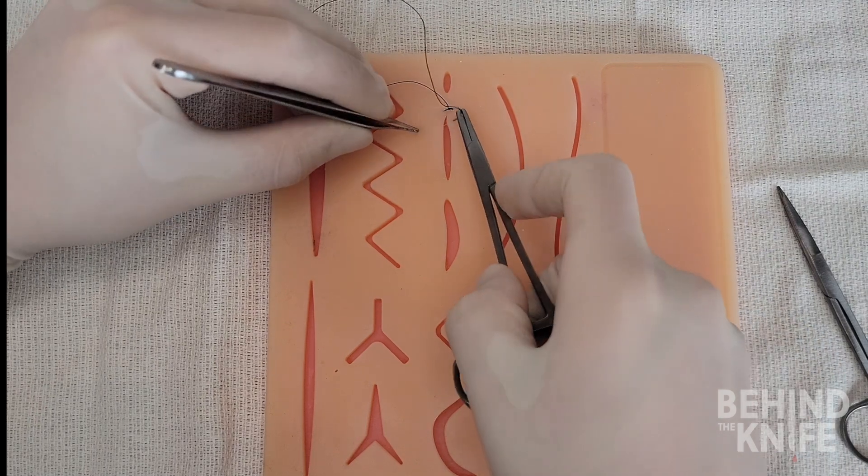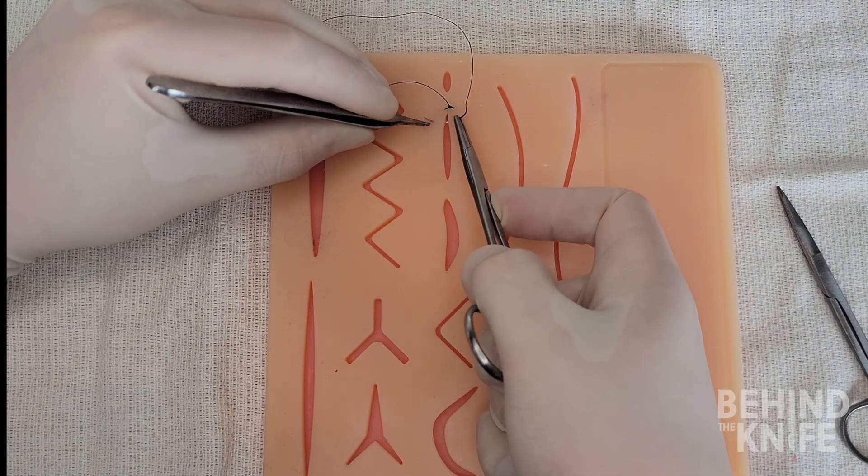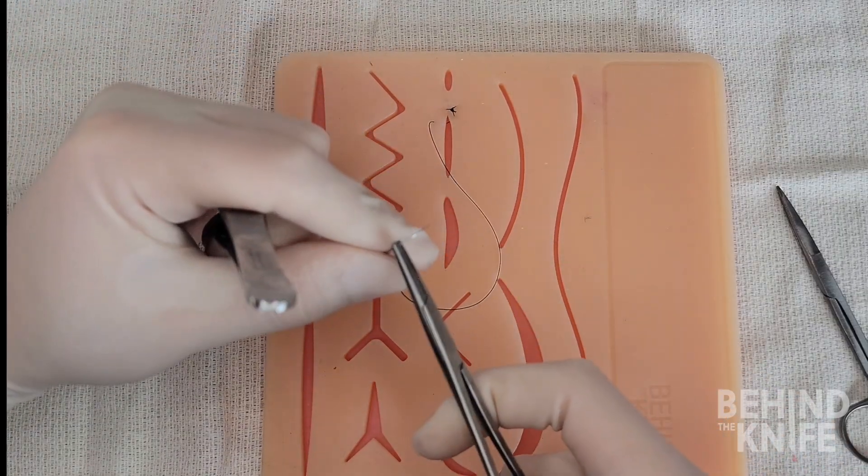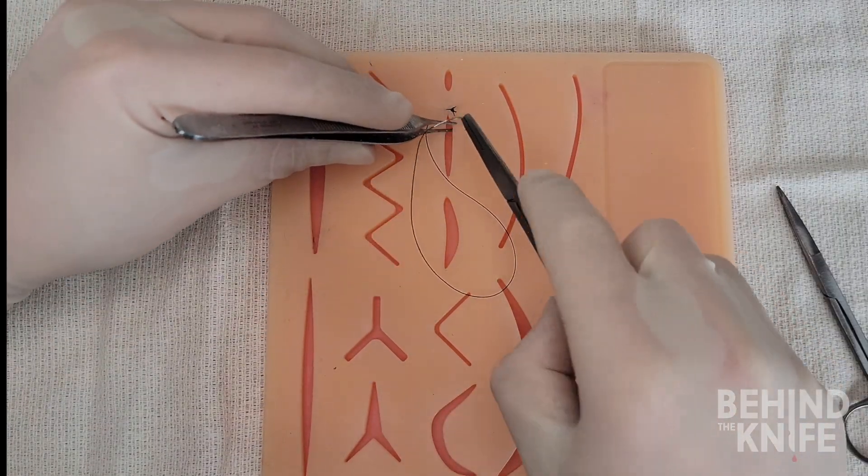We will then throw a series of simple interrupted throws moving towards us but instead of tying a knot we will just reload our needle when it comes out of the epidermis in preparation for the next sequential throw.